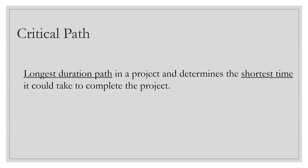Now let's go through the definition. The definition is very confusing — this is one of the most confusing definitions I have learned in PMP. It says: the longest duration path in a project, and determines the shortest time it could take to complete the project. You might think: what? It says 'longest duration path' and then also says 'shortest time.' How does that not sound self-contradictory? How can a path of longest duration also be of shortest time? Let's read it slowly and find out the exact meaning.